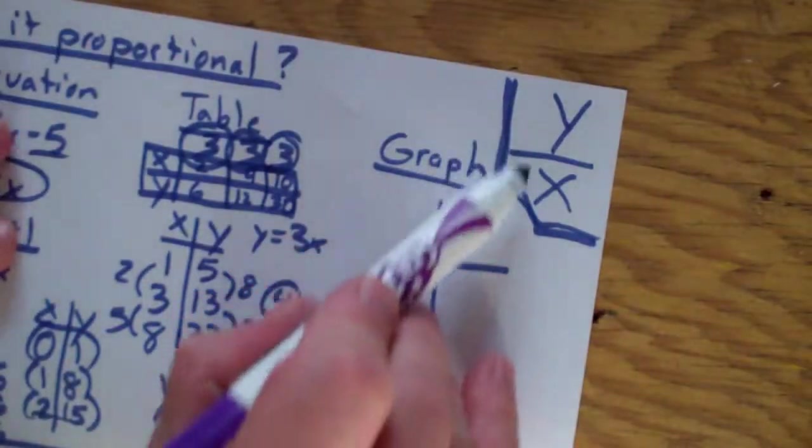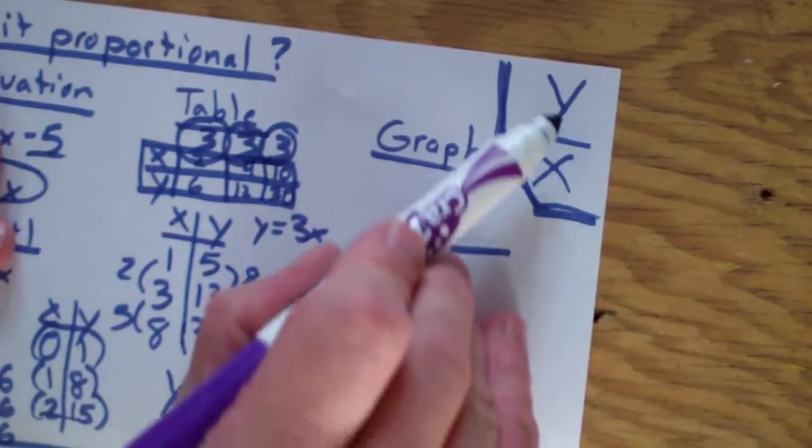So if you can just divide y by x and you get the same thing every time, it is proportional.